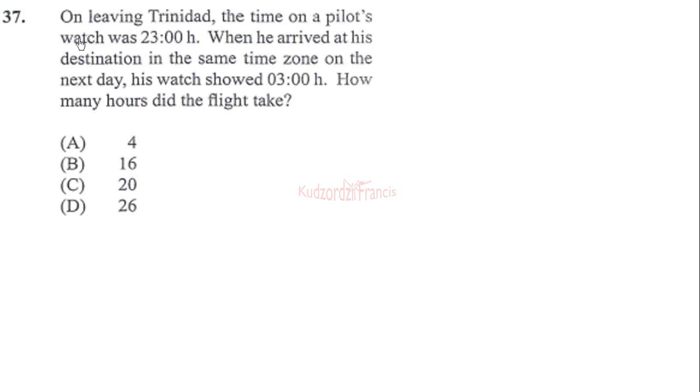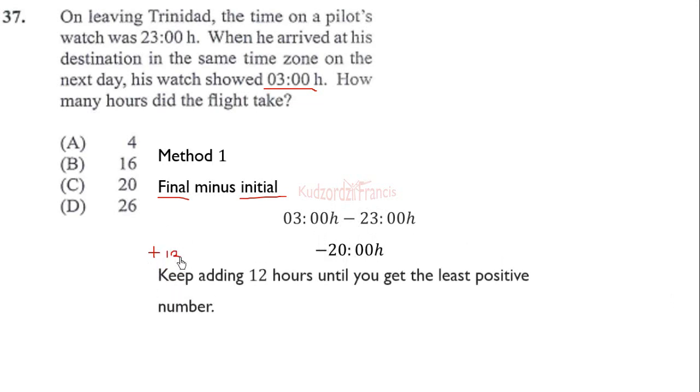Problem 37: on leaving Trinidad, the time on a pilot's watch was 23:00 hours. When he arrived at his destination in the same time zone on the next day, his watch showed 03:00 hours. How many hours did the flight take? Method 1: we use final hour minus initial hour. The final is 3 hours and initial is 23 hours. That gives negative 20. We add the clock hours, which is 12, until we get a positive value. Negative 20 plus 12 is negative 8. Add 12 again to get 4. Therefore it's 4 hours.